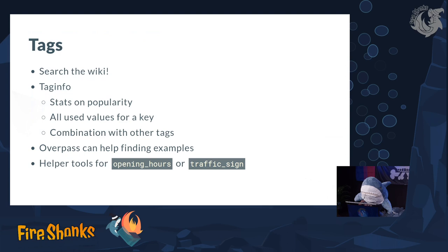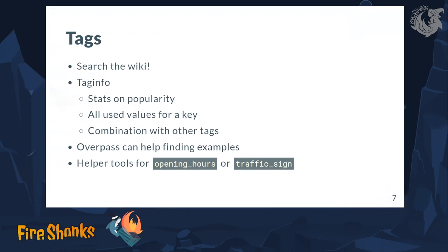TagInfo is a website that has statistics on popularity of OpenStreetMap tags. It has all the values used somewhere in the world for a specific key, and you can also find combinations where a tag is very often used with another tag. You can also use Overpass to find features and use them as an example. For some specific tags like opening hours or traffic signs, there are specific dedicated tools — they are not built into iD, but you can find them, and they help with these somewhat more complicated values.